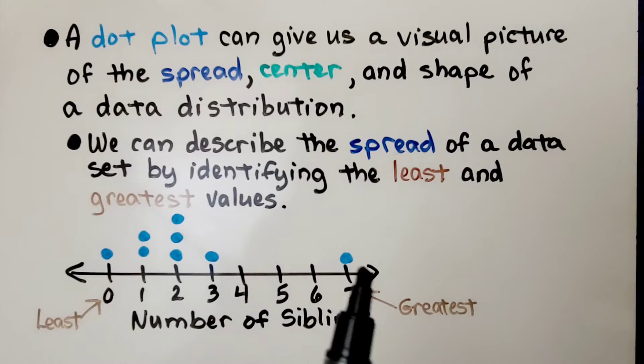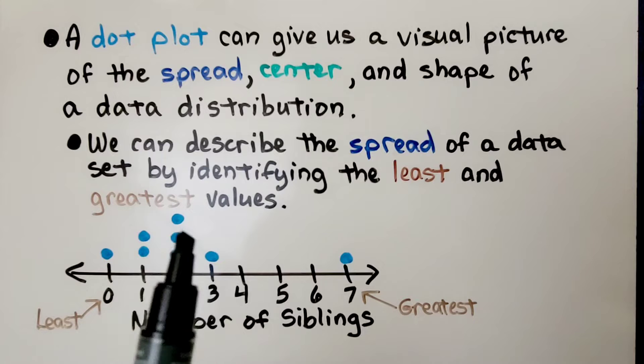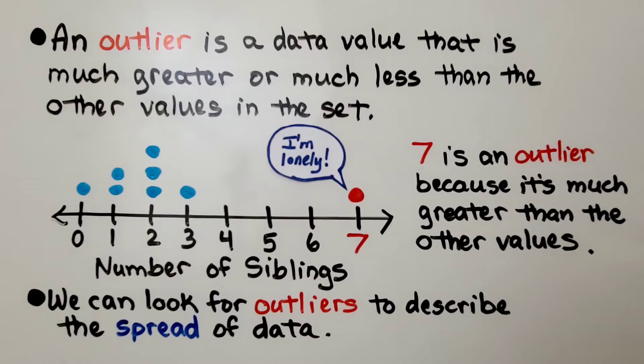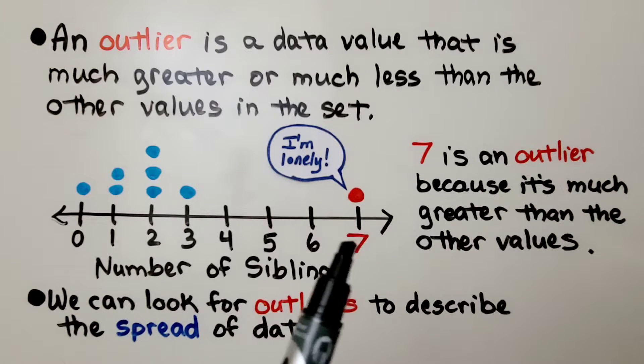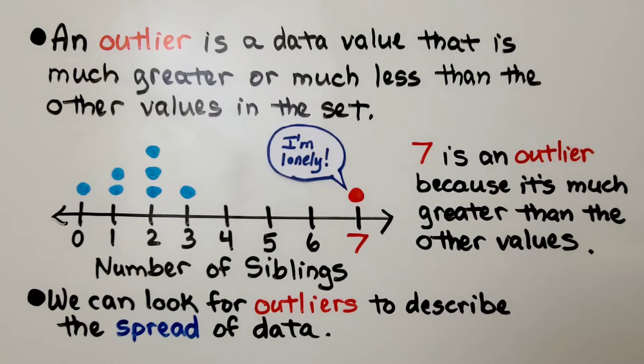That is quite different than the normal one or two clustered right here. An outlier is a data value that is much greater or much less than the other values in the set. So this seven, that is an outlier. It is way far away from the other values. It is an outlier because it is much greater than the other values. And we can look for outliers to describe the spread of data.